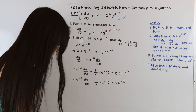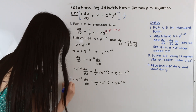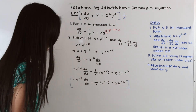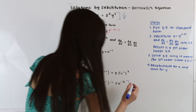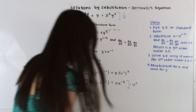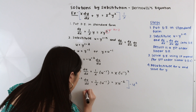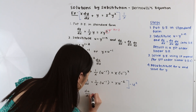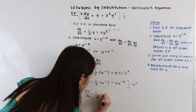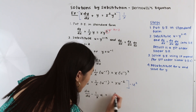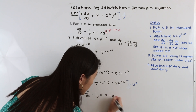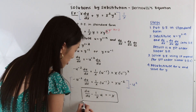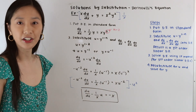Now let's put this into standard form by multiplying the entire differential equation by −u squared. Doing that, we get du/dx − (1/x)u = −x. Now we have a first order linear differential equation that we can solve using the method of the integrating factor.